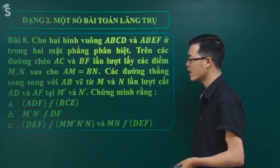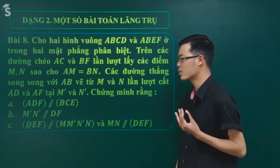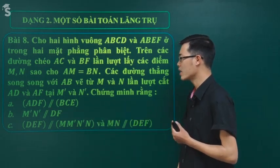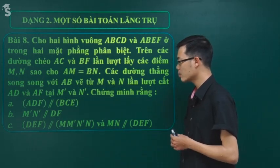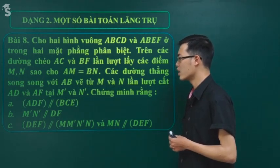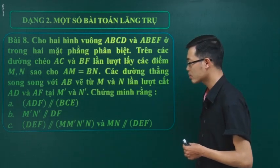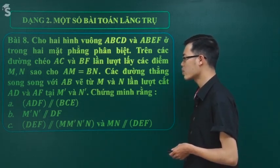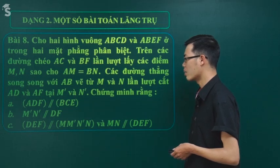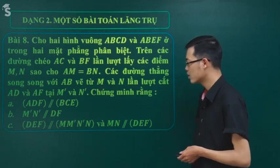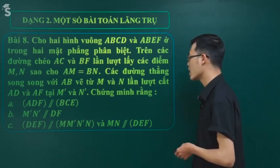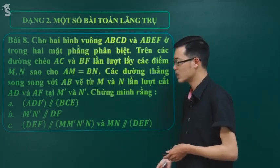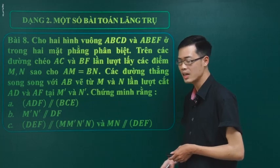Chứng minh ba ý: Thứ nhất, mặt phẳng ADF song song mặt phẳng BCE. Thứ hai, chứng minh đường thẳng M'N' song song DF. Thứ ba, chứng minh mặt phẳng DEF song song mặt phẳng MM'N'N, và MN song song DF. Các ý này sẽ hỗ trợ lẫn cho nhau. Bây giờ chúng ta sẽ làm từng ý một.